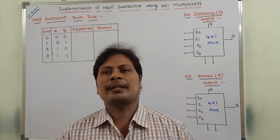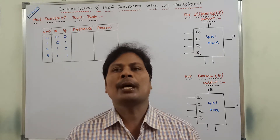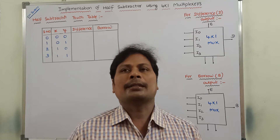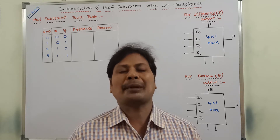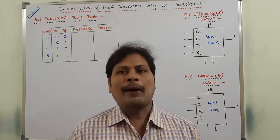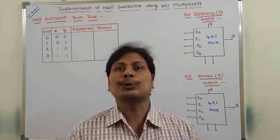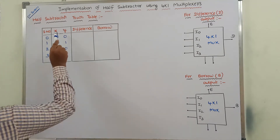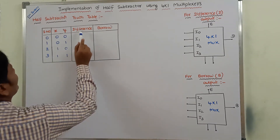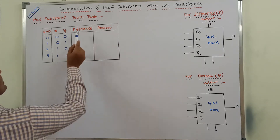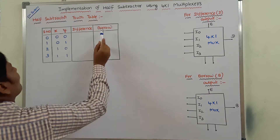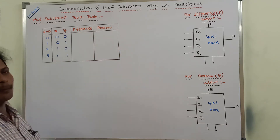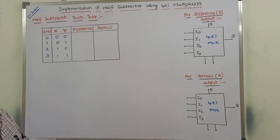Before going to the implementation, first of all, we need to know what is a half subtractor. Half subtractor is a combinational circuit that is used for performing the subtraction operation between 2 bits. Half subtractor can take 2 inputs and it produces 2 outputs. The 2 inputs are X and Y, and the 2 outputs are difference and borrow. Difference is denoted by capital D and borrow is denoted by capital B.